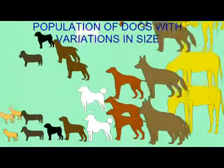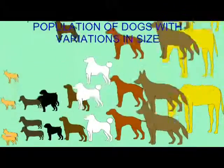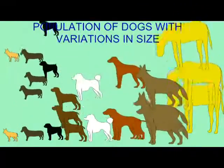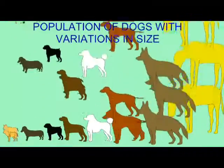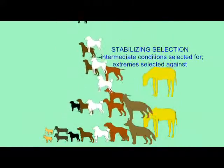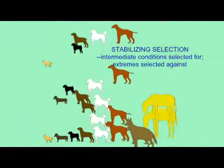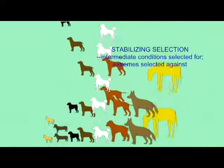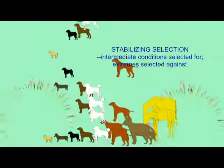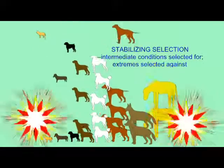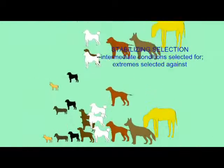In some cases, natural selection keeps the norm — natural selection does not always induce change. There could be cases where the extremes of a population in terms of phenotype are at a disadvantage, and those which are more the median phenotype have the most success. As those in the median population produce more offspring, the mean of the population will therefore be maintained throughout generations. This is stabilizing selection.